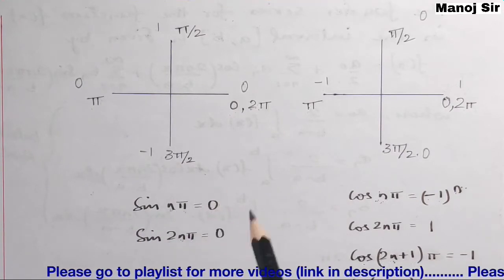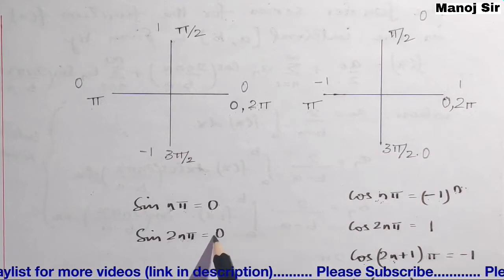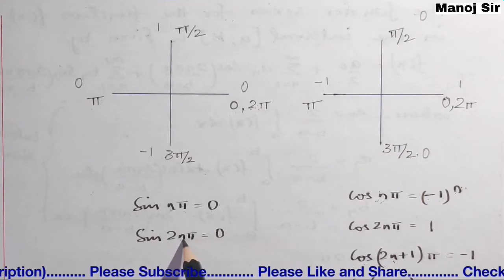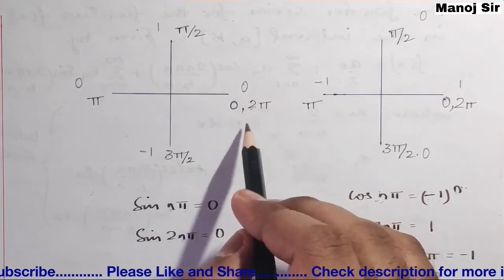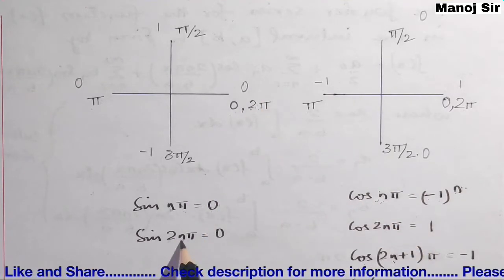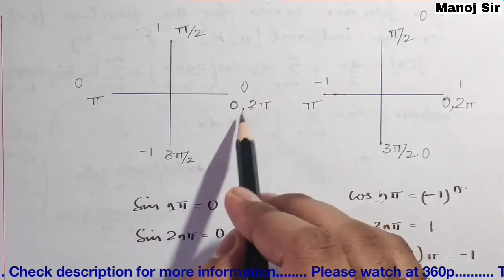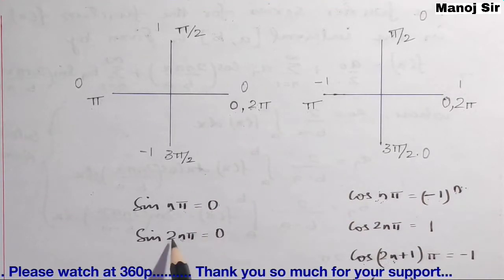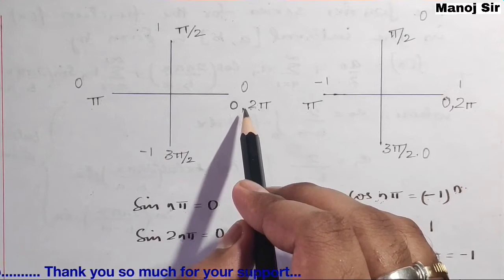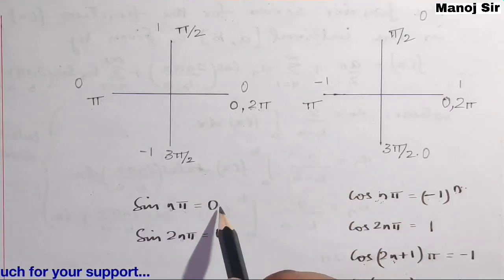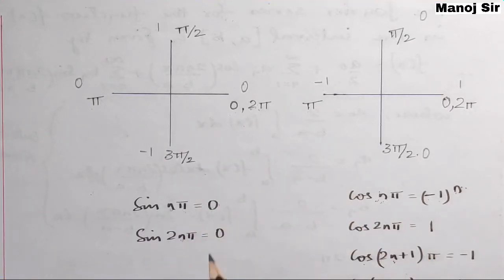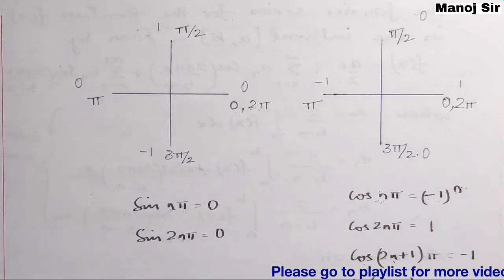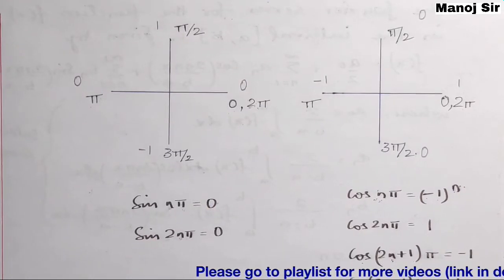To confirm: sin(nπ) = 0 always. For sin(2nπ): putting n=1 gives sin(2π)=0; n=2 gives sin(4π)=0; n=3 gives sin(6π)=0. So sin(2nπ) = 0 always. These two results are very important for solving Fourier series problems.